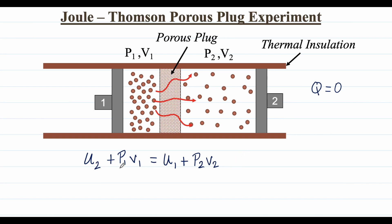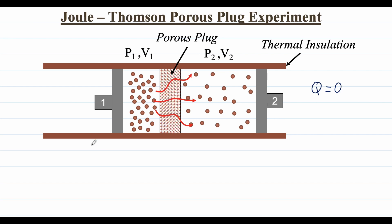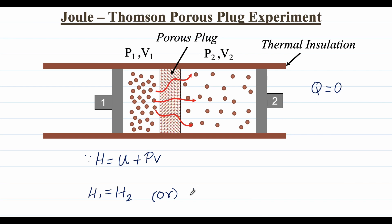Both sides of the equation are equivalent, so we can flip it to present the initial state on the left: U1 plus P1 V1 equals U2 plus P2 V2. From the definition of enthalpy, H equals U plus PV, so substituting gives H1 equals H2, meaning the change in enthalpy equals zero.